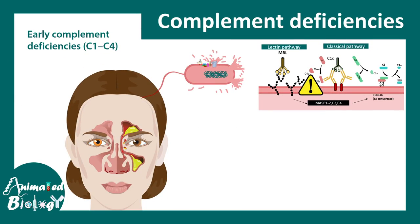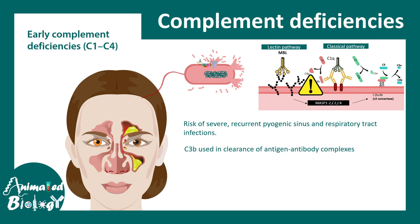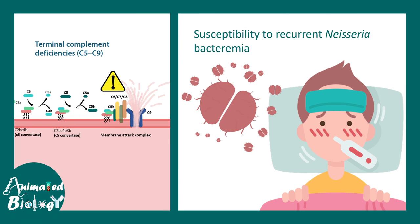Now let's talk about complement deficiencies. Early complement deficiency is basically deficiency in complement proteins C1 to C4. A major deficiency occurs at C3, and when C3 is not available, the initial part of the complement system is disrupted. This increases the chances of recurrent pyogenic infections and respiratory tract infections. C3B and the C3 convertase enzyme complex cannot form, so complement fixation is not happening and it also increases the risk of systemic lupus.